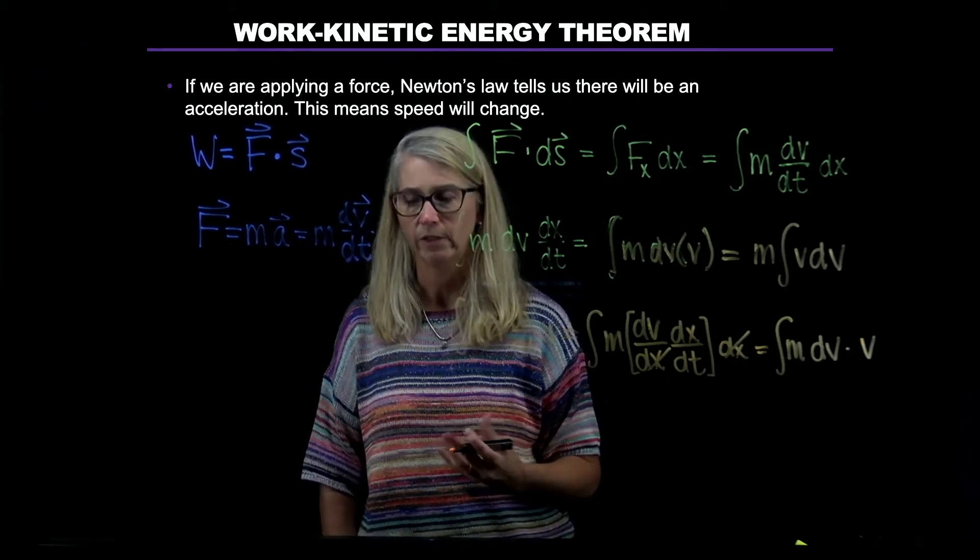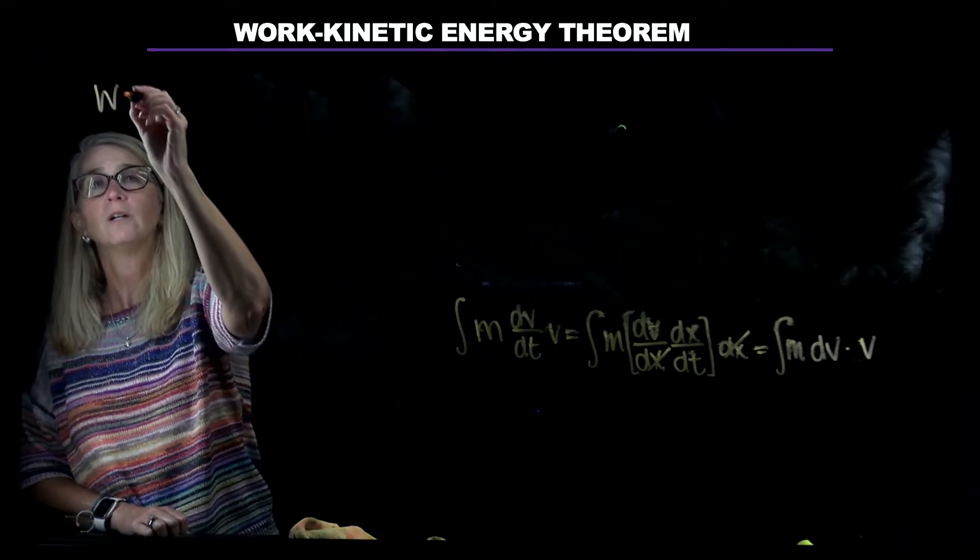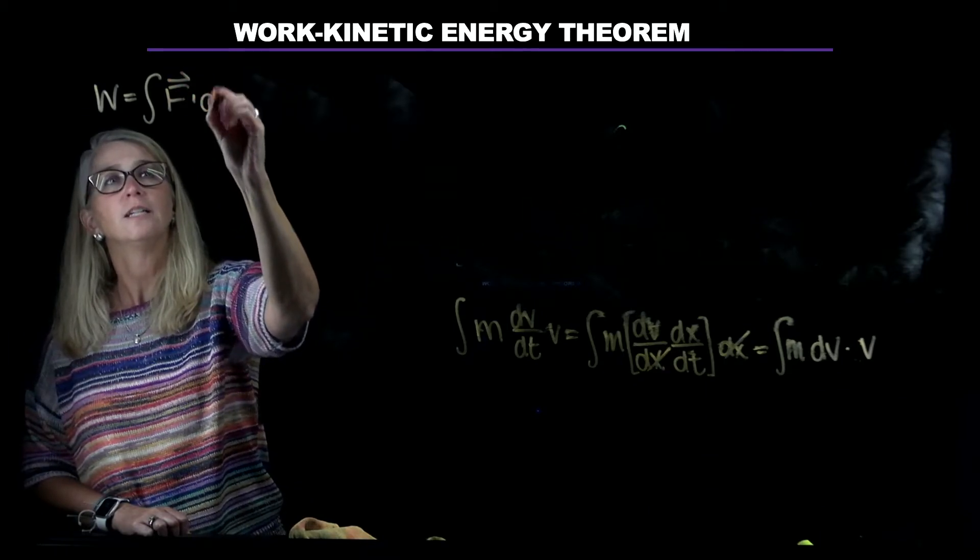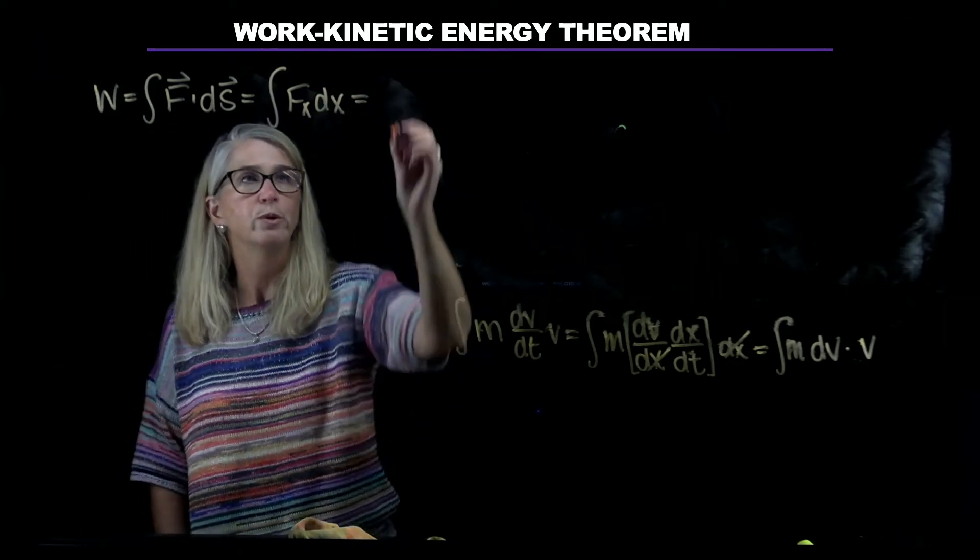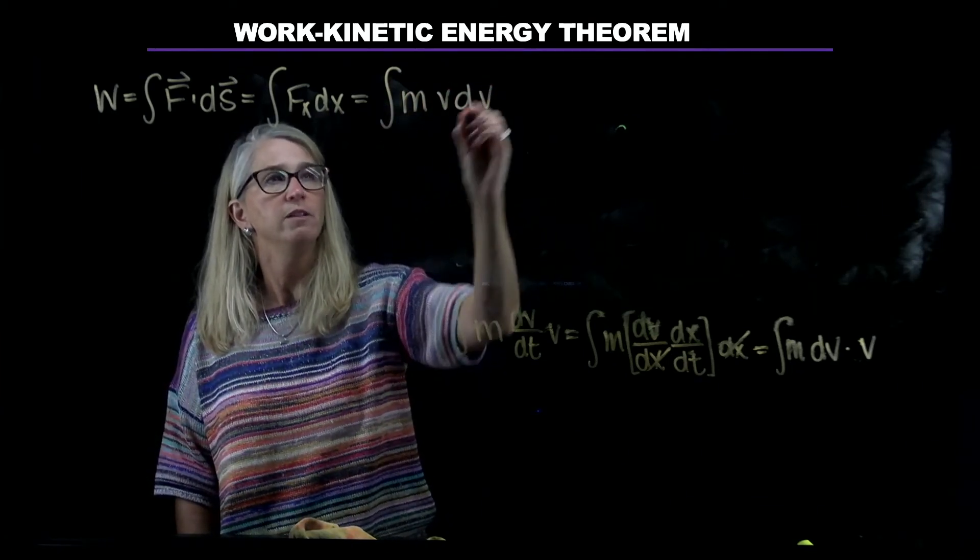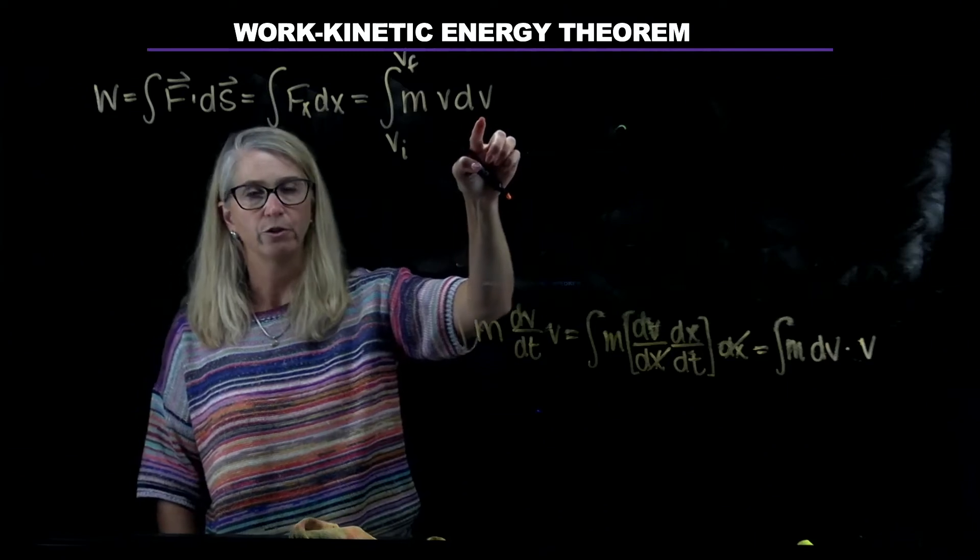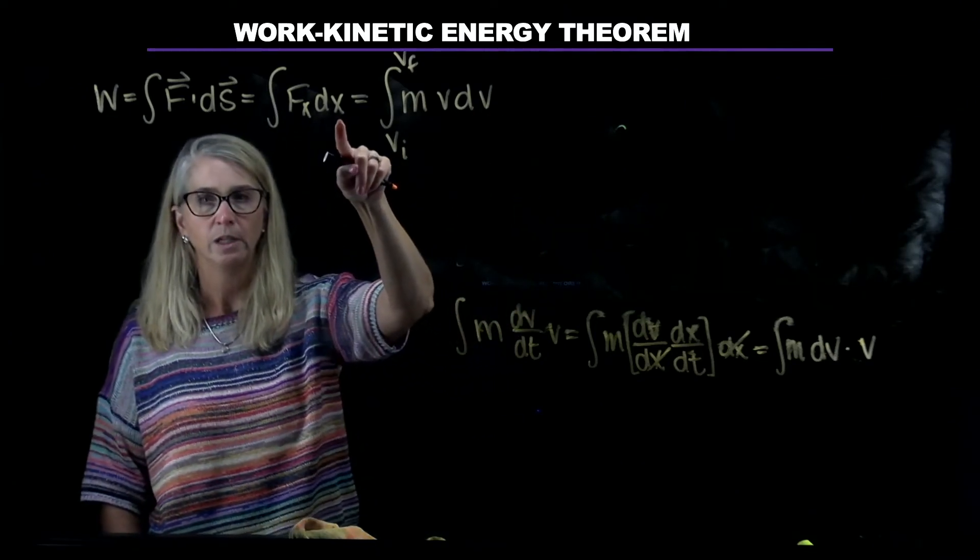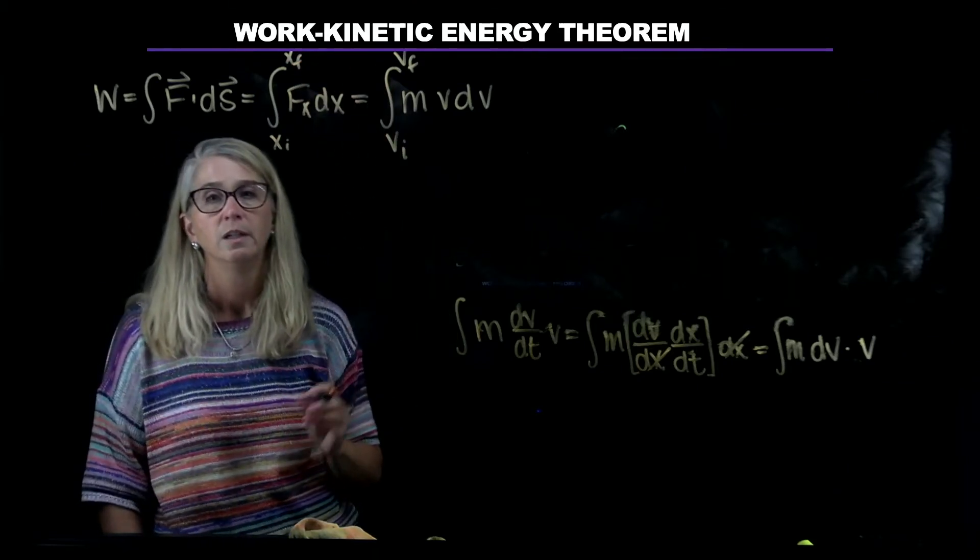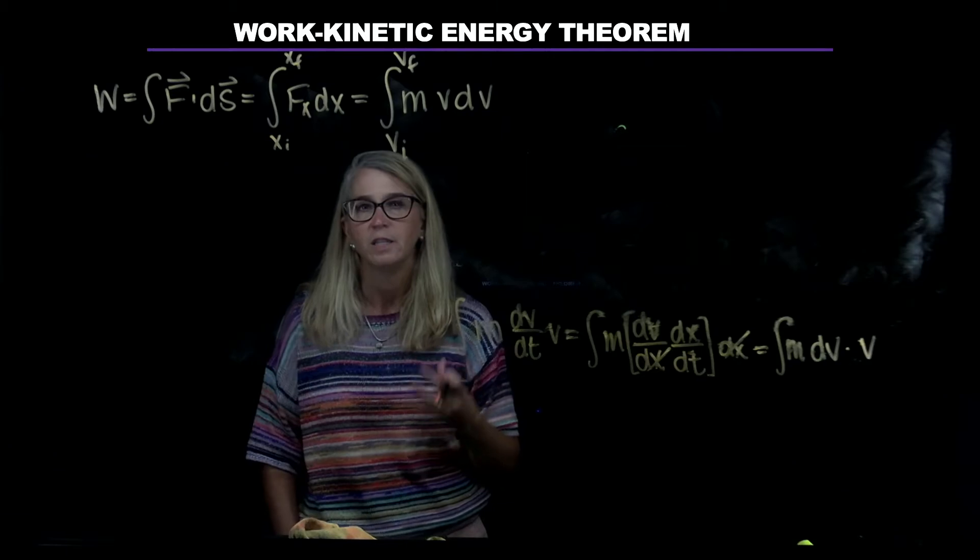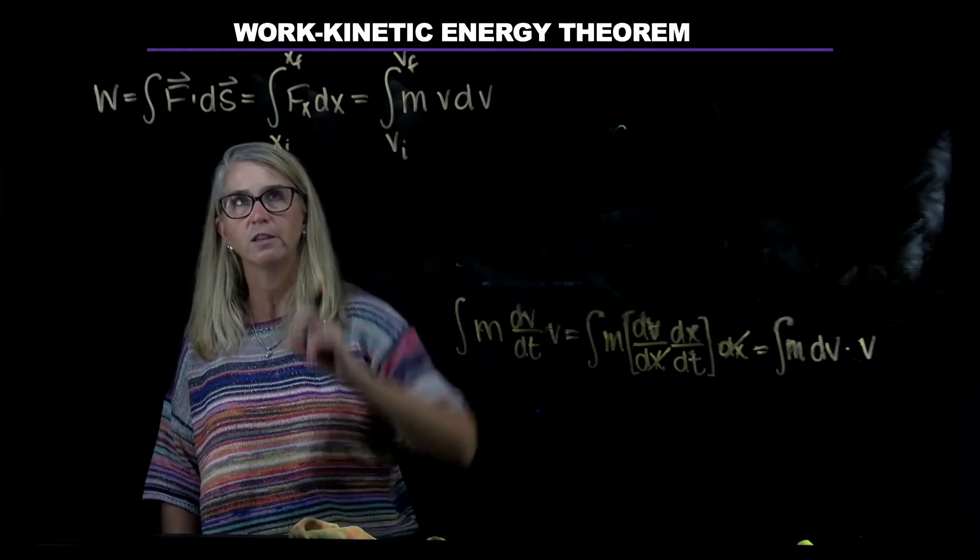Now we want to see what that gives us. Work is the integral of F dot ds. We changed it to F of x dx, and after a series of steps, we said it could be written as the integral of m times v times dv, from v initial to v final. Because we changed the variable we're integrating over, we're now integrating over velocity, whereas before we were integrating over position from x initial to x final. These endpoints correspond to each other - the initial velocity corresponds to the speed it had at the initial position, same with the final velocity and final position.